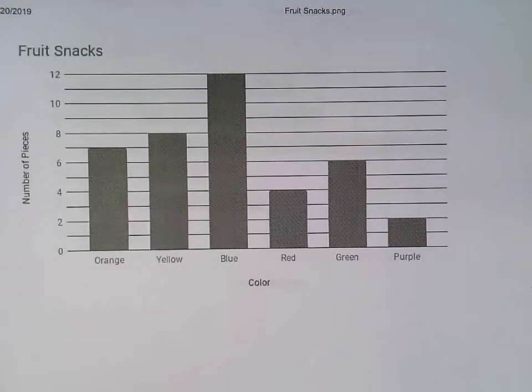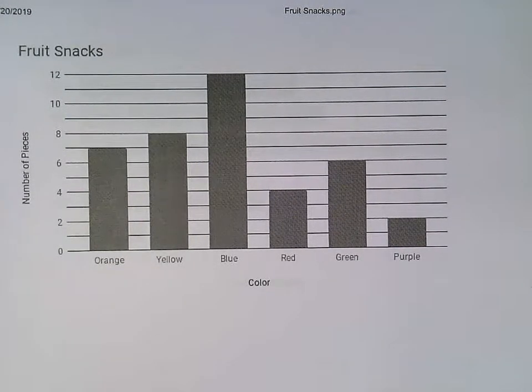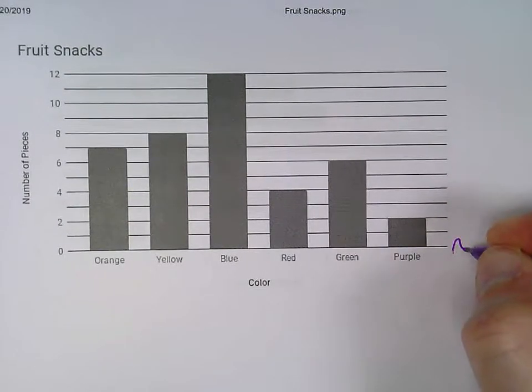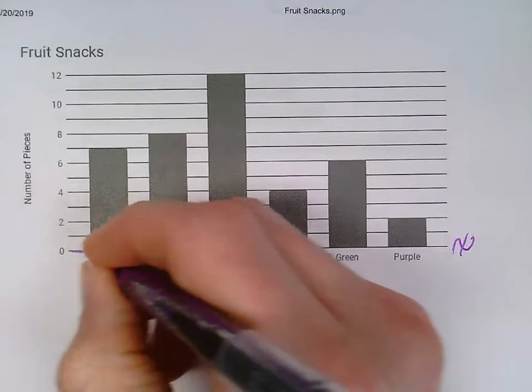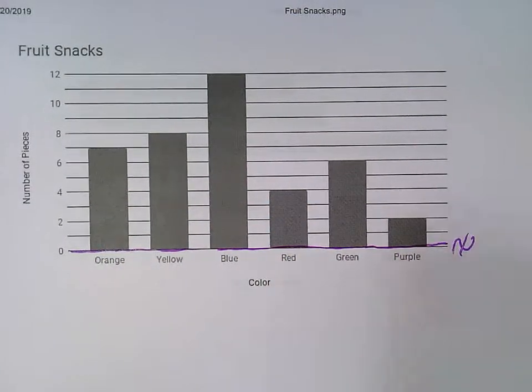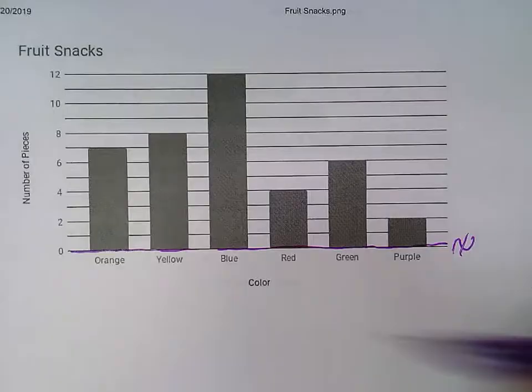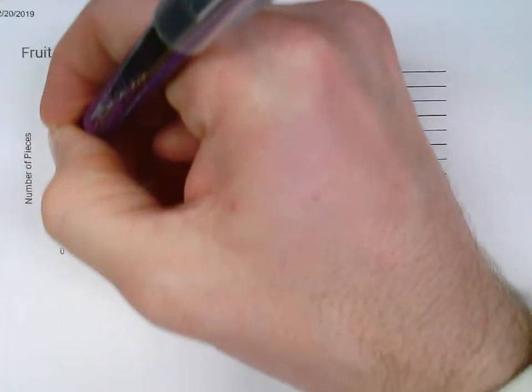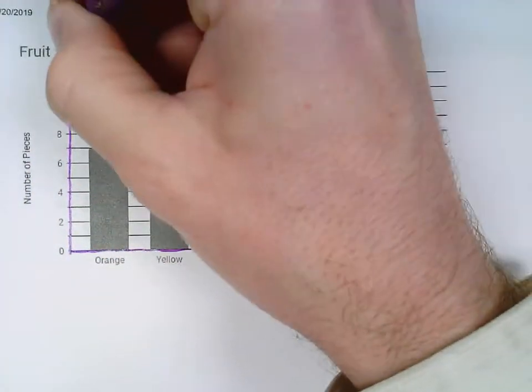Now all graphs have an x-axis and a y-axis. This one here that goes across the bottom on the zero line, that is an x-axis. This one that goes up and down, that is the y-axis.